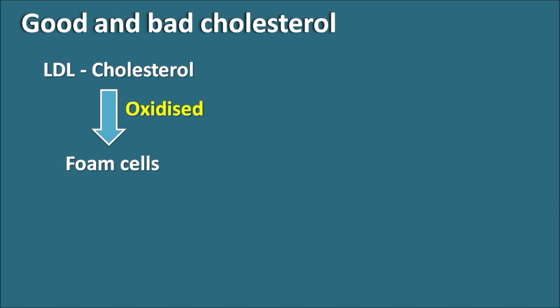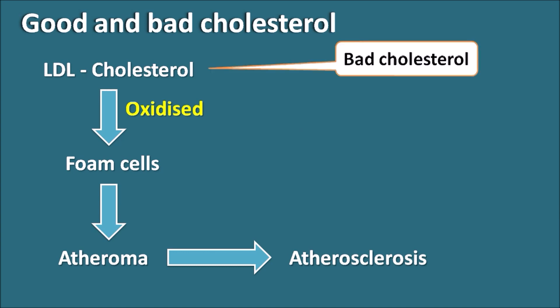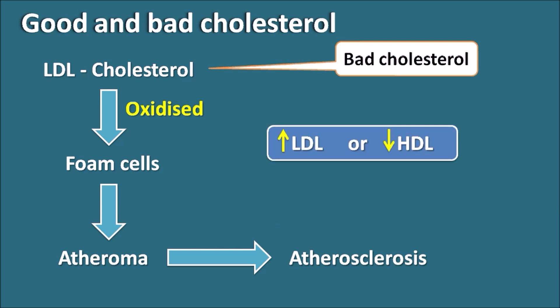These foam cells initiate various reactions like the coagulation cascade, activation of platelets, and release of inflammatory mediators, all causing formation of a plaque called atheroma. Atheroma is a fibrous plaque formed within the intima of the blood vessel, causing atherosclerosis — a narrowing of the blood vessel. That's why LDL is called bad cholesterol. Either an increase in LDL or a decrease in HDL can induce atherosclerosis.